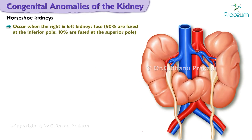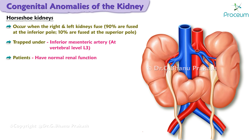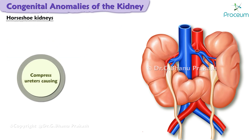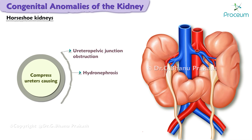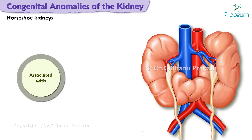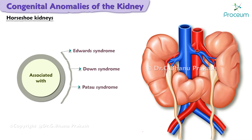Horseshoe kidneys occur when the right and left kidneys fuse. Ninety percent are fused at the inferior pole, whereas ten percent are fused at the superior pole. Horseshoe kidneys become trapped under the inferior mesenteric artery at vertebral level L3. Patients with horseshoe kidneys have normal renal function, but horseshoe kidneys may compress the ureters, potentially causing ureteropelvic junction obstruction, hydronephrosis, renal stones, and infection.